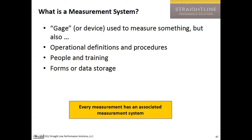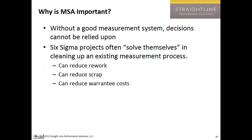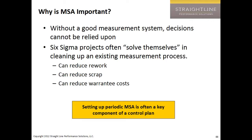When we want to fix a measurement system, we have to think about what the data tells us: A, that it does need to be fixed, and B, what might work. Without a good measurement system, we cannot make decisions based on data that are worth anything. Setting up periodic MSA is often a key component of a control plan, because it helps keep us testing on a monthly or quarterly basis to make sure that when somebody says 'can we trust this data?' we can say without equivocation, yes, absolutely we can.